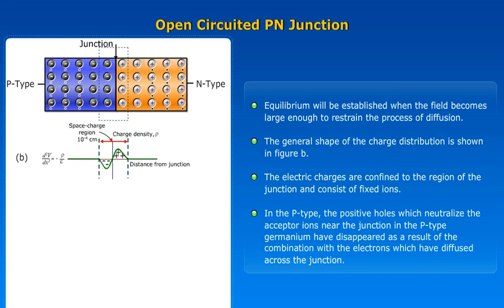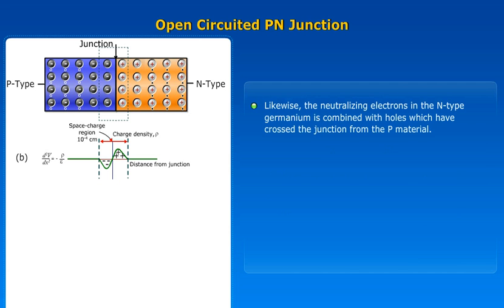In the P-type, the positive holes which neutralize the acceptor ions near the junction in the P-type germanium have disappeared as a result of combination with the electrons which have diffused across the junction. Likewise, the neutralizing electrons in the N-type germanium have combined with holes which have crossed the junction from the P-material.